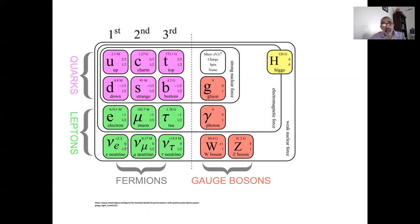These then are the 12 particles, constituted by three different families — first generation, second generation, third generation — each generation having four particles. There are sound theoretical reasons in the Standard Model why there should be four particles per generation. But as of now, nobody has any idea why nature decided to have three generations instead of just one, which makes up all of our ordinary matter. Scientists feel very strongly that no fourth generation will be discovered.